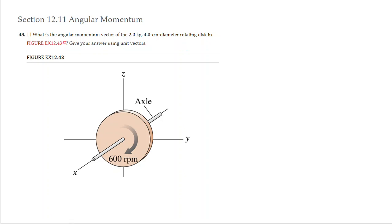Hi students, let us solve this exercise about angular momentum. In this case they say: what is the angular momentum vector of the 2 kg and 4 cm diameter rotating disc that is given below? Give your answer using unit vectors.